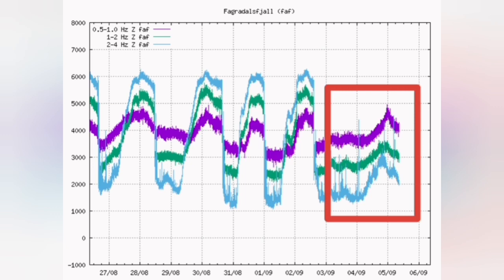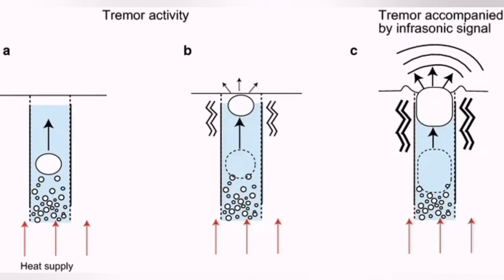It has to melt these slabs as they fall into it. This reduces the amount of heat available to create the bubbles, burst them, and cause the tremors that we see.